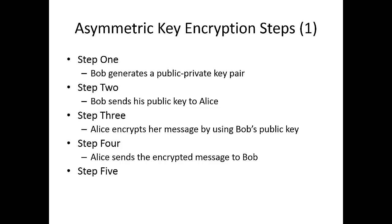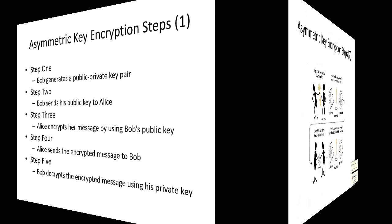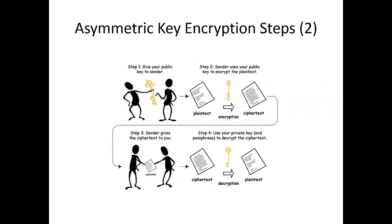Step four is Alice sending the encrypted message to Bob. Even if Eve intercepts this encrypted message, Eve doesn't have a chance to decrypt it because the only key that allows somebody to decrypt this encrypted message is the private key — also called the secret key — only available to Bob. And step five is Bob finally decrypting the encrypted message using his private key. Everything can be summarized in this figure.